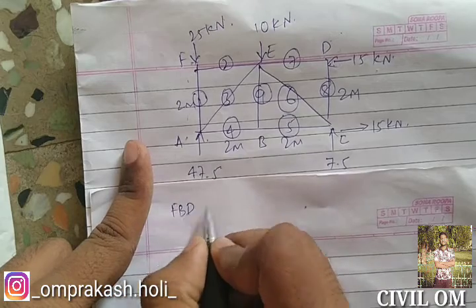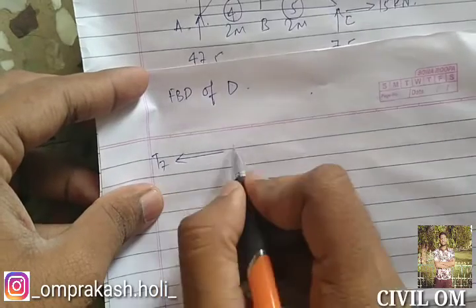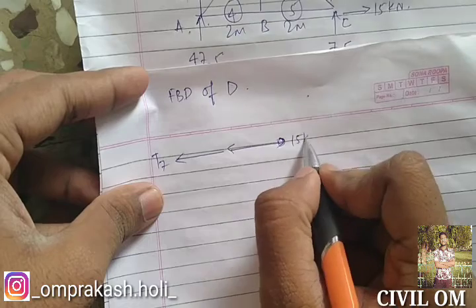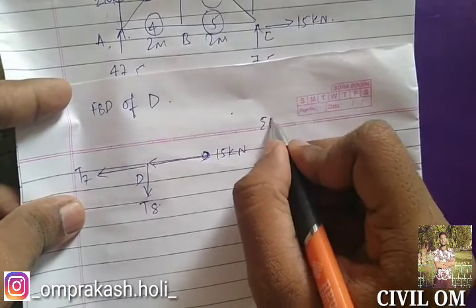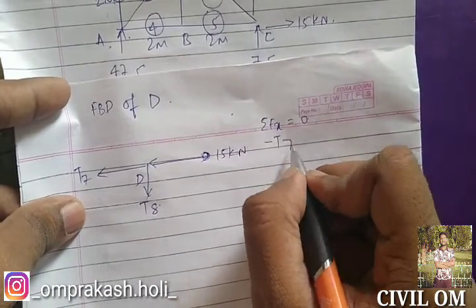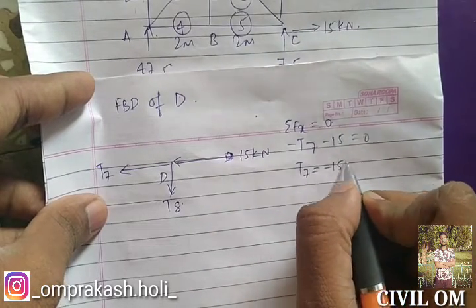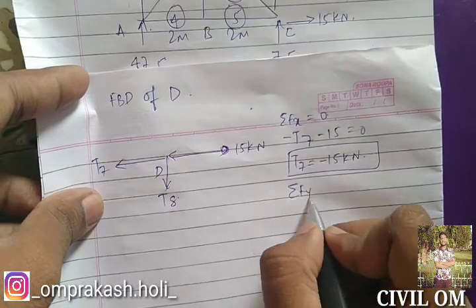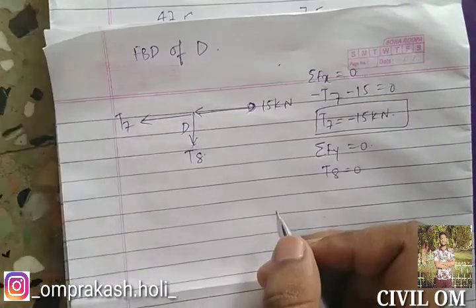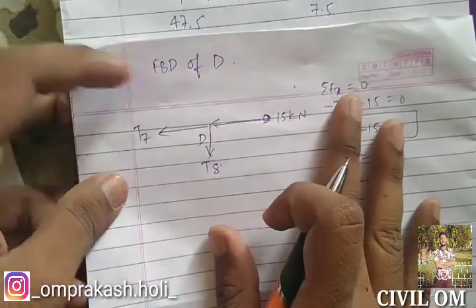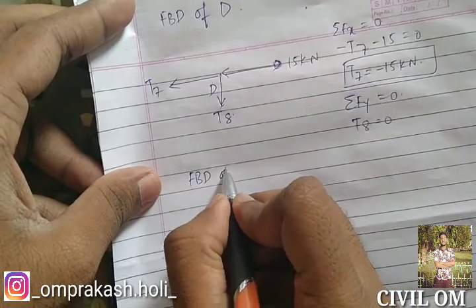Let us draw the free body diagram of point D. We have T7 and T8 acting here, with 15 kilonewton applied. Considering summation of FX equal to 0: minus T7 minus 15 equal to 0, so T7 equals minus 15 kilonewton. Considering summation of FY equal to 0: since only T8 acts vertically, T8 equals 0.